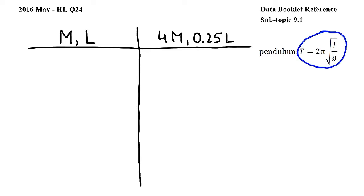Using this equation from subtopic 9.1 where T is period, l is the length of the pendulum and g is the gravitational acceleration, I can write an equation for the pendulum with mass m and length l. So then I get T is equal to 2π times square root of l over g.